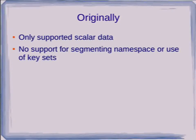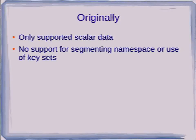Originally it only supported the scalar data type — it simply ignored everything else. It had no support for segmenting the namespace in any way, so it basically treated the whole Redis namespace as a single table. About the only thing you could do was say you want just that one key — it would push down a qual from Postgres on the key name for equality only, and then fetch just that key. Otherwise it would give you back all the rows and it was up to Postgres to apply any WHERE conditions.